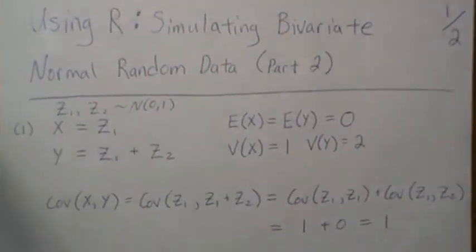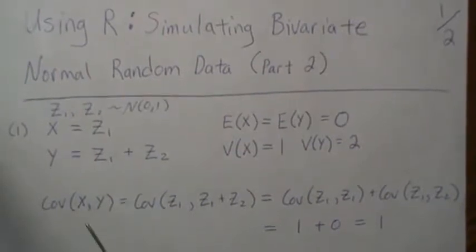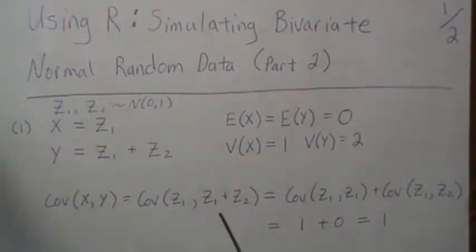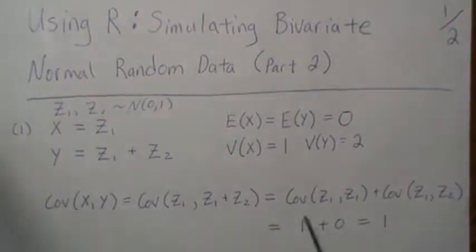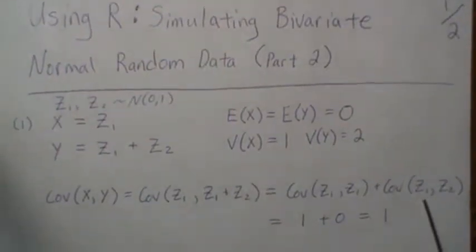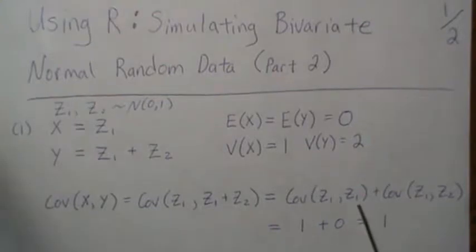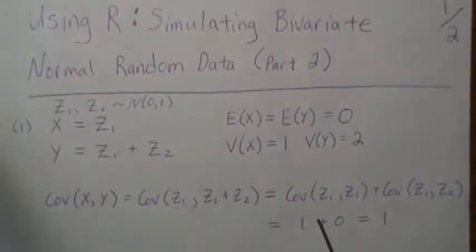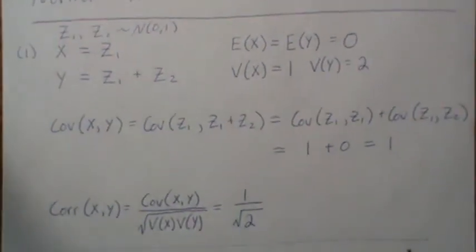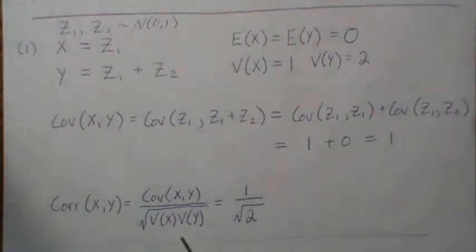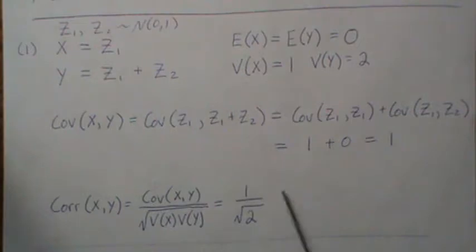To find the correlation between x and y, we first find the covariance. Plugging in the linear combination and breaking it into pieces: the covariance between z1 and z2 is zero since they're independent, and the covariance of z1 with itself is the variance, which is one. So the covariance is one. The correlation is the covariance divided by the square root of the product of the variances — covariance is one, variance of x is one, variance of y is two.